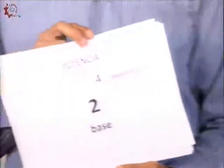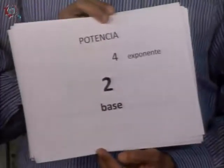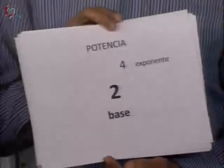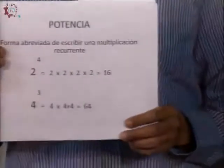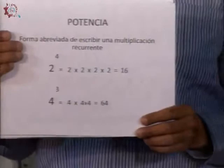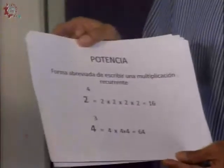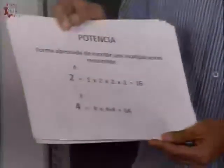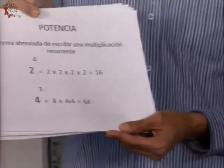Una potencia está conformada por dos partes: una base y un exponente. Si se dan cuenta, la base es un número más grande que el exponente. El exponente siempre es un número más pequeño. El exponente me va a indicar cuántas veces tengo que multiplicar la base por sí misma.